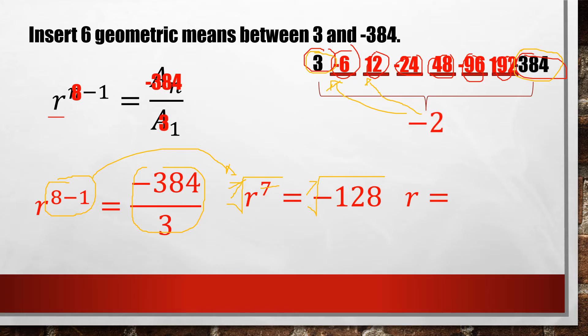To double-check: negative 2 times 192 gives exactly our last term, negative 384. This confirms our inserted geometric means are correct. This is how we insert multiple geometric means.